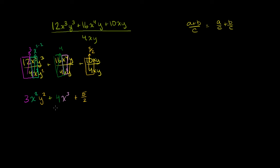Plus 5 halves. And then x divided by x, those just cancel out. That's just 1. y divided by y, that's just 1 as well. So we're just left with 5 halves. And we're done. This whole expression simplified to 3x squared, y squared, plus 4x to the third, plus 5 halves.